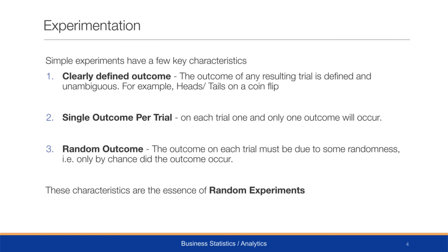Simple experiments have a few key characteristics. Number one is they have to have a clearly defined outcome. This means that the outcome of any trial is defined and unambiguous. For example, heads or tails on a coin flip — there really is no other option. Some might joke that the side of the coin is an option, but we're not interested in that.